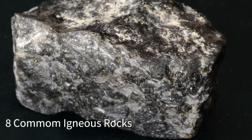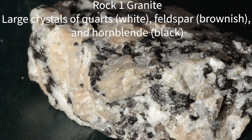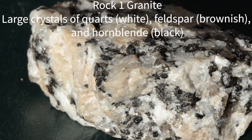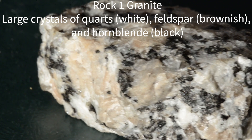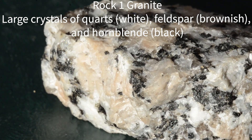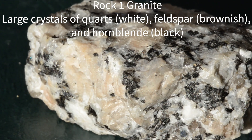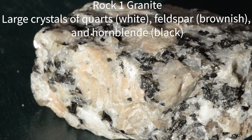We'll start with the most common one, which is granite. It's an intrusive rock. It has very big crystals. The three major minerals are quartz, which is white in color, feldspar, which is brownish in color, and the black colored mineral is hornblende.